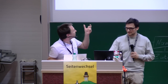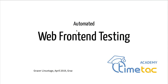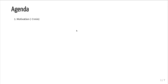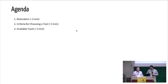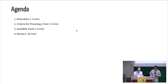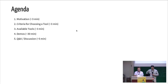I added 'automated' because I wasn't certain it's clear that it needs to be automated. The agenda: a three-minute motivation on why we do automated front-end testing, three minutes for choosing a tool — there are so many tools — then we mention a few available tools. Most of the half hour goes into demos. We'll show you two tools in action before taking questions.